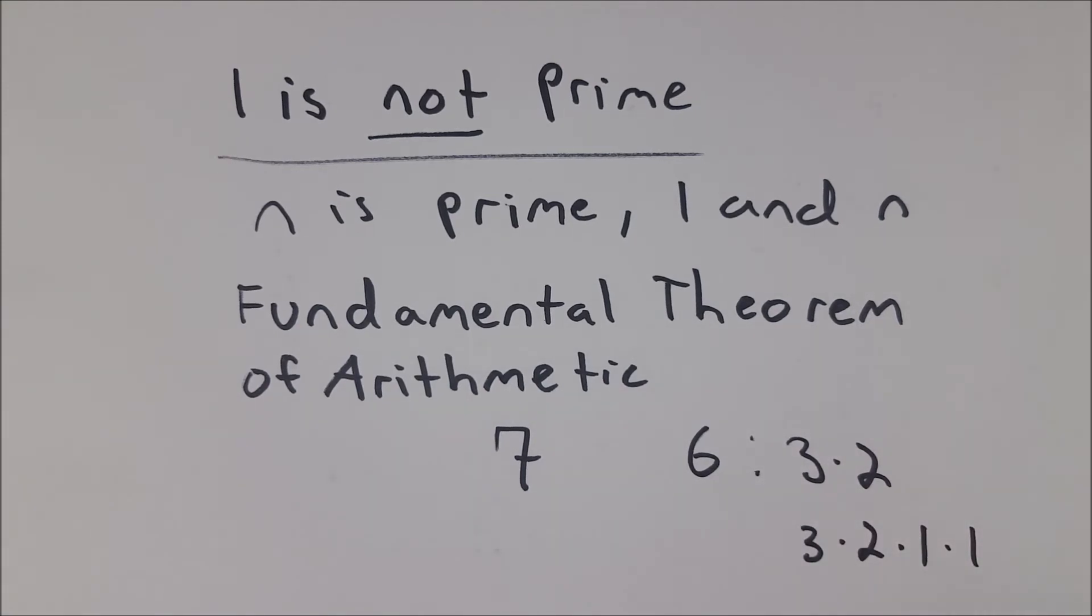You could just keep multiplying by 1, which every time you did that, it would be a new, distinct, unique prime factorization. So if we let 1 be prime, then the Fundamental Theorem of Arithmetic, again, is either not true, or we have to overcomplicate it. And so it's easier to just say 1 is not prime, and of course that's totally up to us. It's just a word we have defined for a particular class of numbers, and 1 is not in that class of numbers, and things work out a lot better that way.